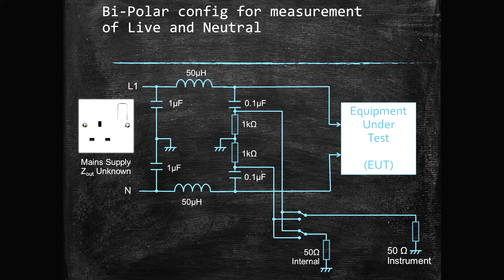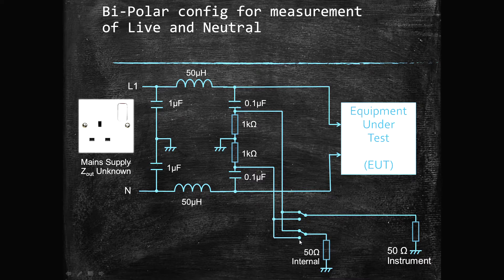As per the standards, we need to test both the live and neutral, so it's actually a bipolar configuration where you'll have the same network on your live and neutral connections, and then a switch to select which line you're testing. Whichever line is not being tested has an internal 50-ohm load attached to it, because the 50-ohm input of your instrument actually forms part of this network. To keep everything consistent, a 50-ohm load is switched in when you toggle the output.